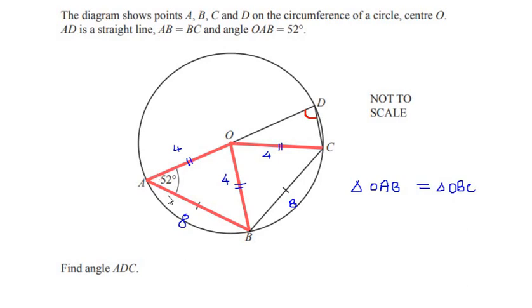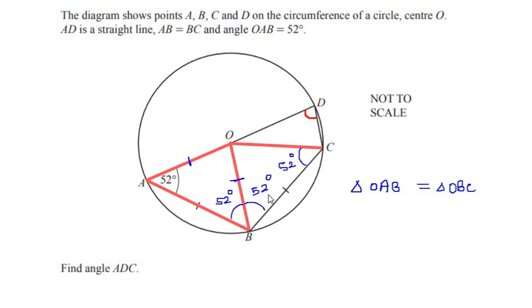Since OA equals OB (both radii), angle OBA is also 52 degrees. Similarly, angle OBC is 52 degrees and angle OCB is also 52 degrees because the triangles are congruent. We can then find the total angle at B by adding 52 degrees and 52 degrees, giving us a total angle of 104 degrees.